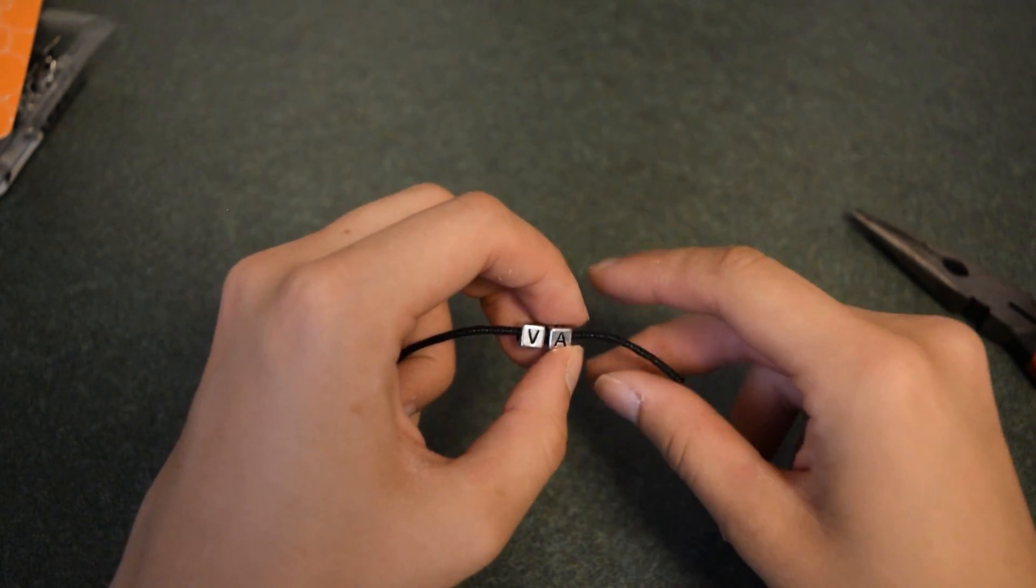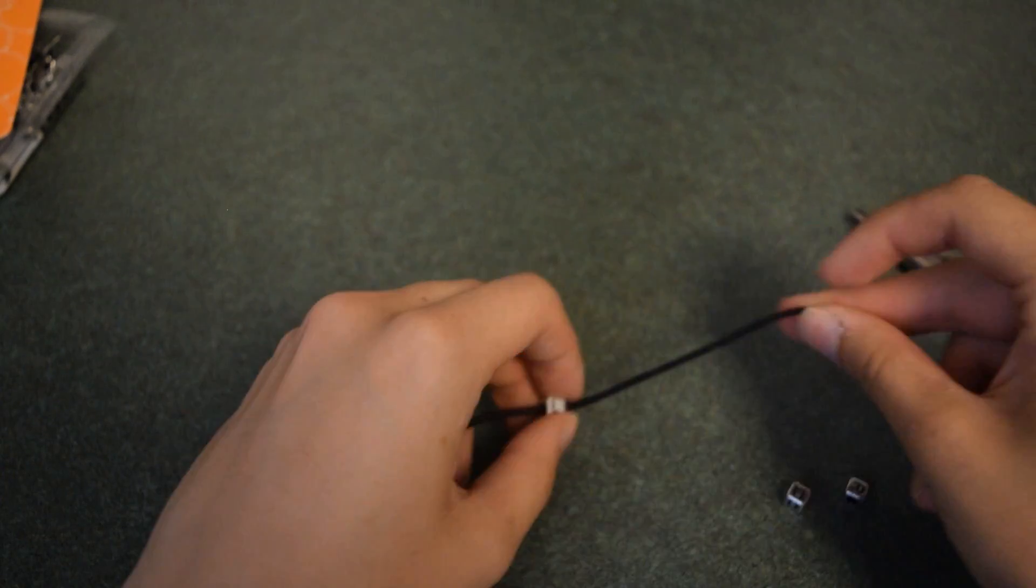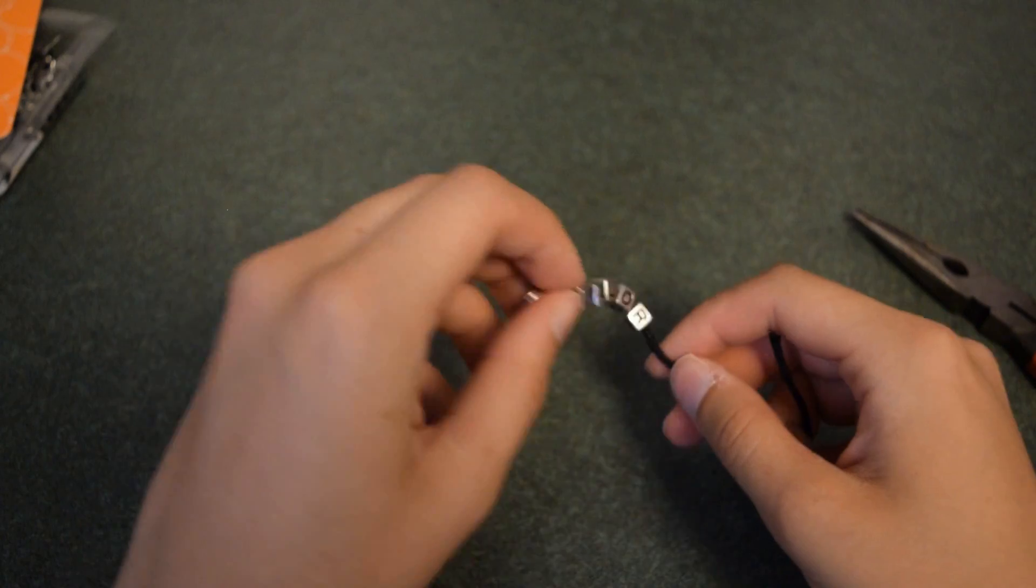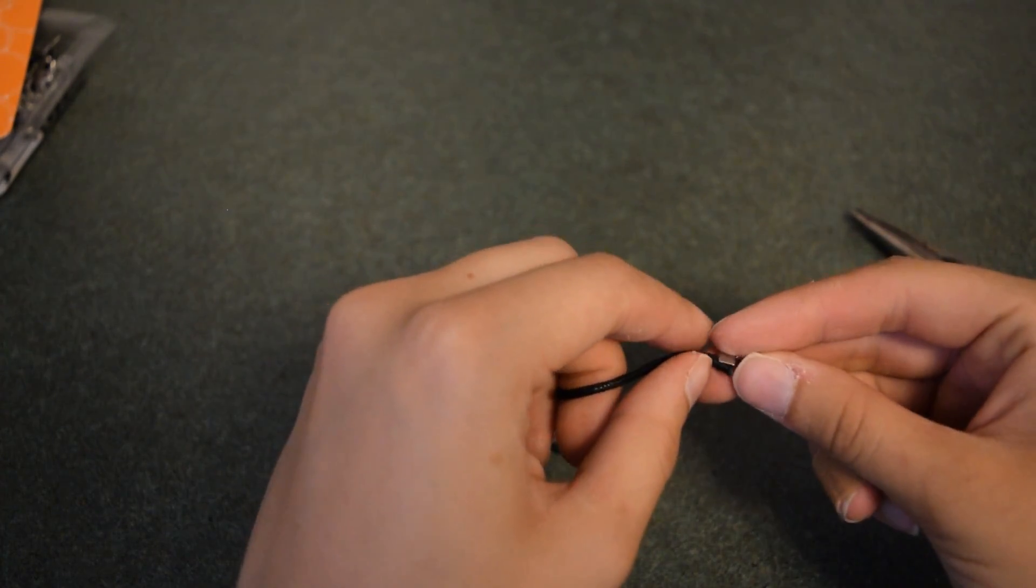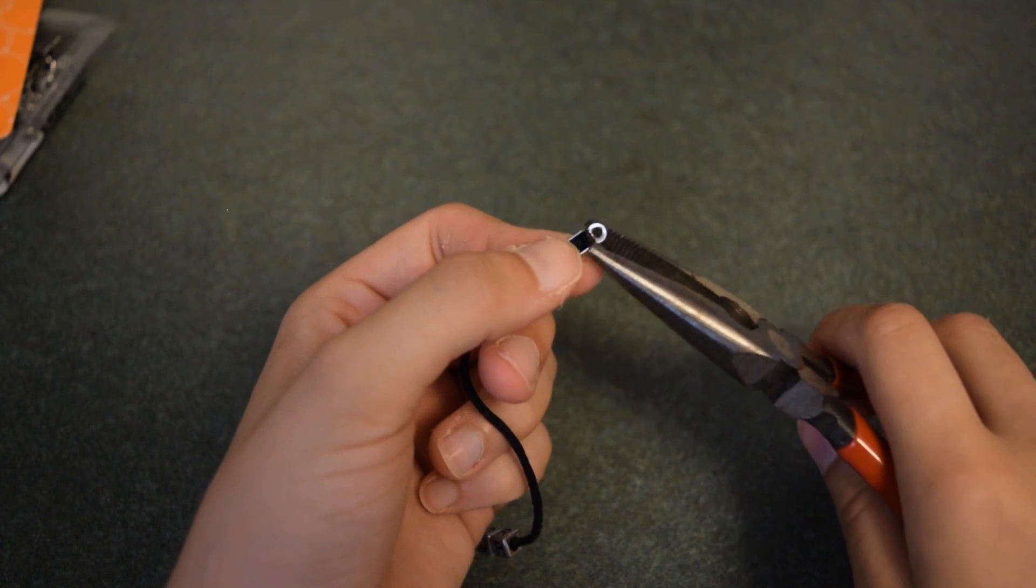I proceeded to thread the letter beads onto the cotton cord. After all the beads were threaded on, I secured the other crimp connector to the other end of the cord.